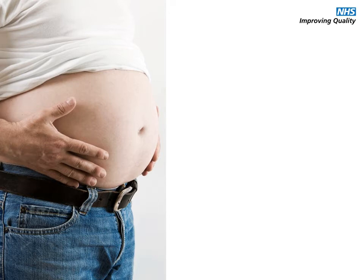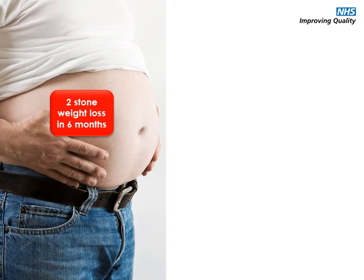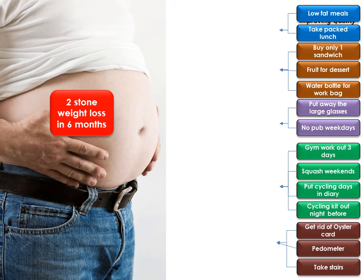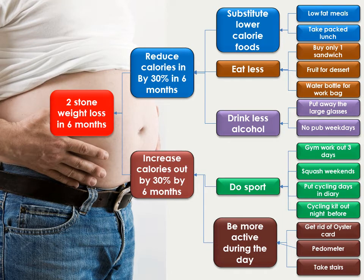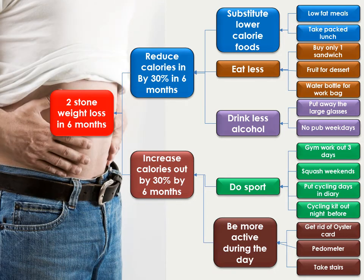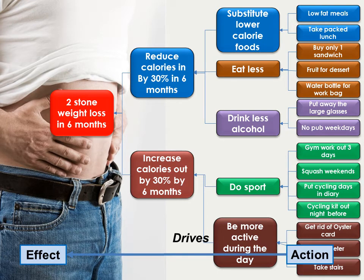Having generated our change ideas and grouped them together into themes, we can now start to build our driver diagram. Our aim is on the left-hand side, and the change ideas or projects are on the right-hand side. These projects have been grouped together to make our secondary drivers, which are interventions necessary to achieve the primary drivers of reducing calories in and increasing calories out, which in turn we hypothesize will help us achieve our aim of losing two stone in six months.